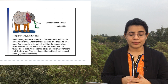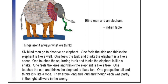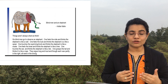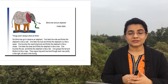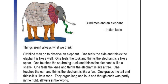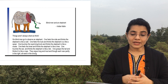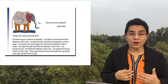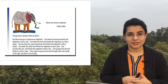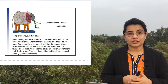This example from Creswell's book shows that things are not always what we think. If you show a picture of an elephant to six blind men, each perceives it differently. One feels the side and thinks it is like a wall; one feels the tusk and thinks it is like a spear; one touches the trunk and thinks it is like a snake; one feels the knee and thinks it is like a tree; one touches the ear and thinks it is like a fan; one grasps the tail and thinks it is like a rope. They all argued, yet each was partly right and partly wrong.